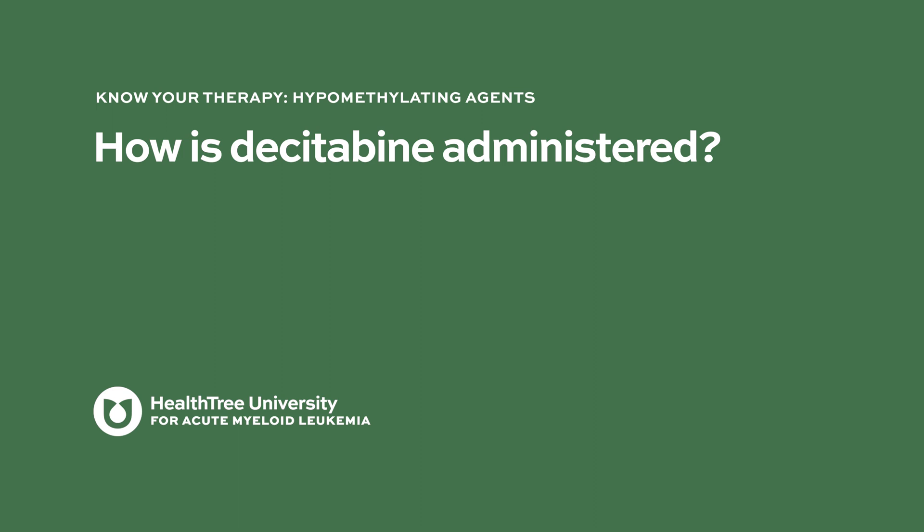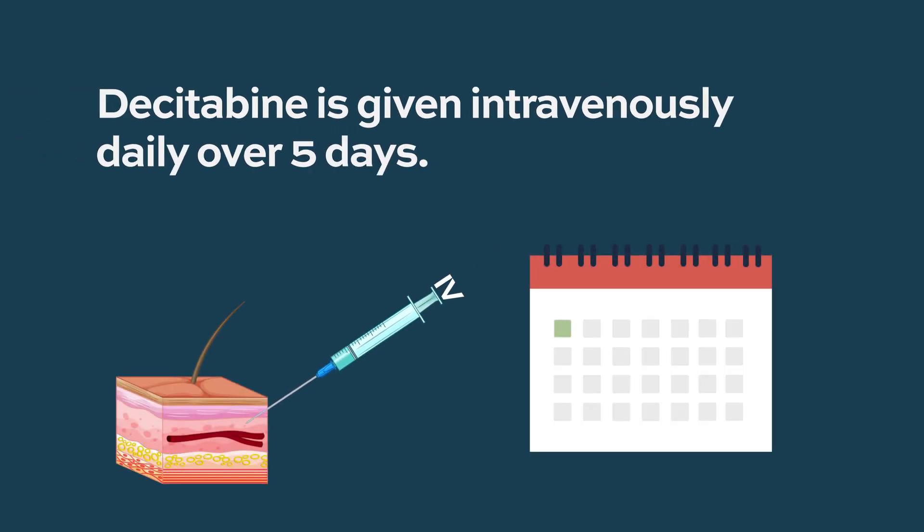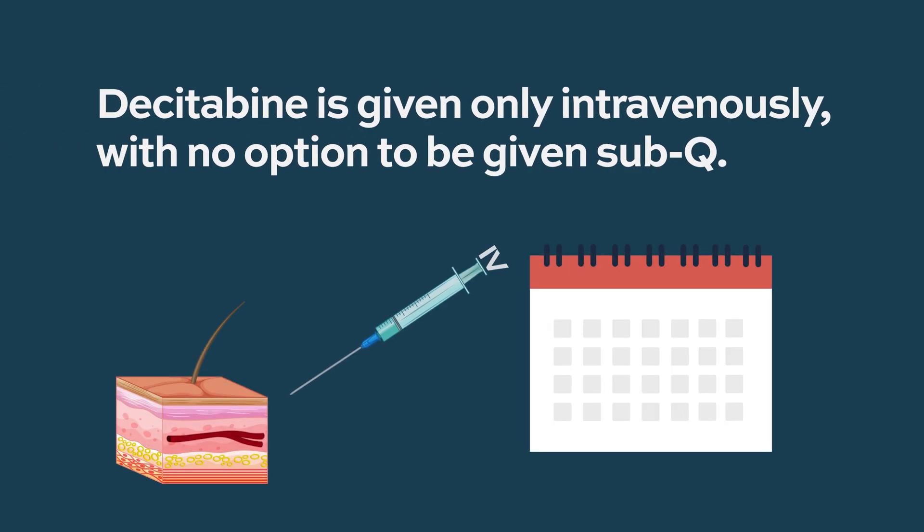How is decitabine administered? It's administered intravenously over five days. We have an oral formulation as well, but that represents a different drug in a way — the oral formulation has a different indication and different function compared to the IV formulation. Decitabine is given IV; we tried subcutaneous, but that did not succeed. So we have IV formulation given daily for five days, and this is the standard of care.